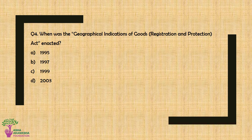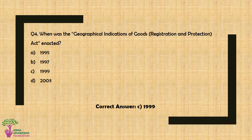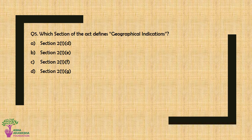Question No. 4: When was the Geographical Indication of Goods Registration and Protection Act enacted? Option A: 1995, Option B: 1997, Option C: 1999, or Option D: 2003. The correct answer is Option C — 1999.